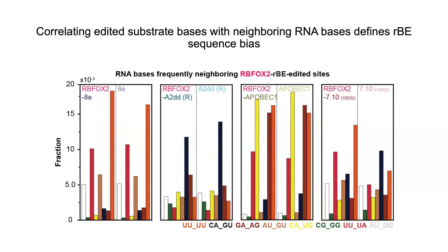Inherent biases in the editing of RBEs are also determined by evaluating the bases flanking each of the edited sites. We refer to these flanking bases as the substrate-based context. To determine the context preferred by each RBE, we quantify the number of edits associated with each possible combination of flanking bases. These combinations are ranked by the total number of edits, revealing a ranking of preferred contexts from most to least preferred for each RBE. Here we can appreciate APOBEC1's known peculiarity for editing bases flanked by adenosine and uridine, whether fused to RBFOX2 or not. We also note that all RBEs tested exhibited distinct substrate context preferences.